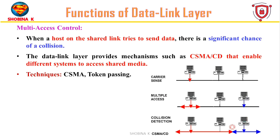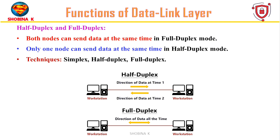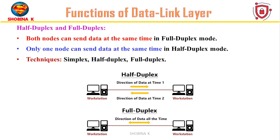The next function is multi-access control. In networks where many devices share a connection, collisions may occur when devices try to send data at the same time. To manage this, the data link layer employs mechanisms like Carrier Sense Multiple Access with Collision Detection or token passing, allowing systems to access shared media fairly and effectively. Finally, we have half duplex and full duplex. In half duplex, data transmission can occur in both directions but not simultaneously — like a walkie-talkie. In full duplex, simultaneous transmission in both directions is allowed — like a telephone conversation. The data link layer utilizes these concepts in medium access control and flow control.